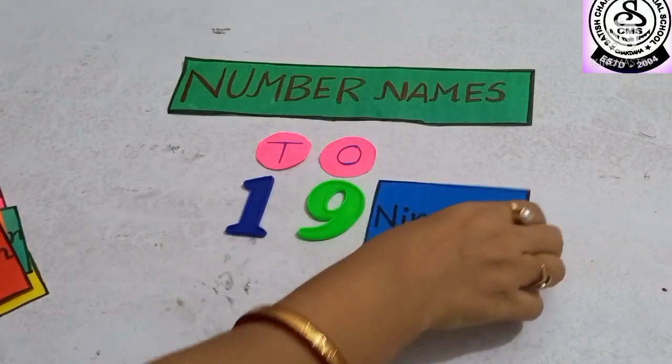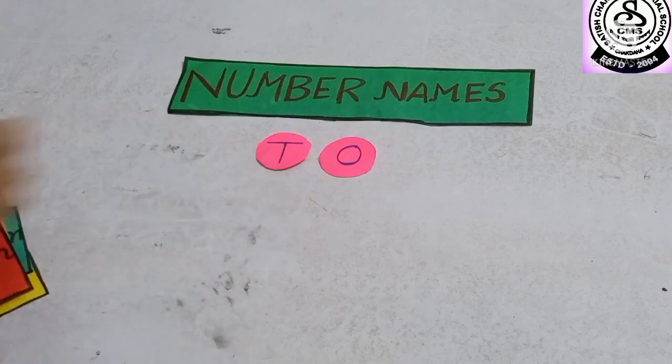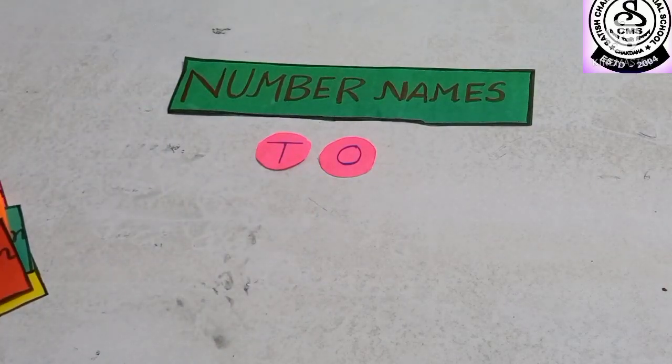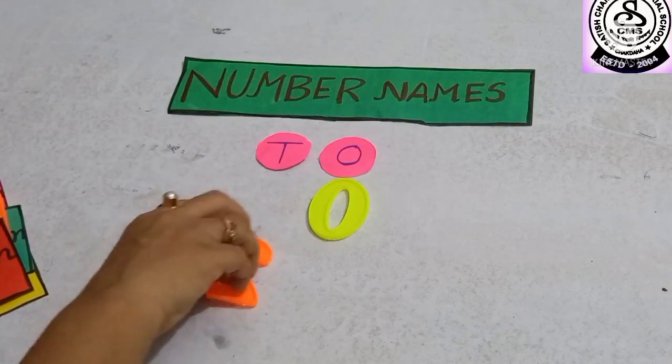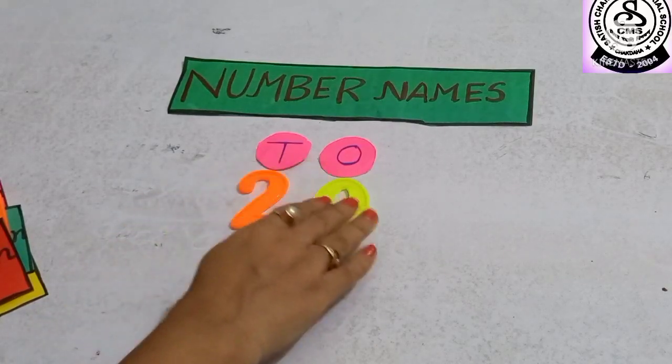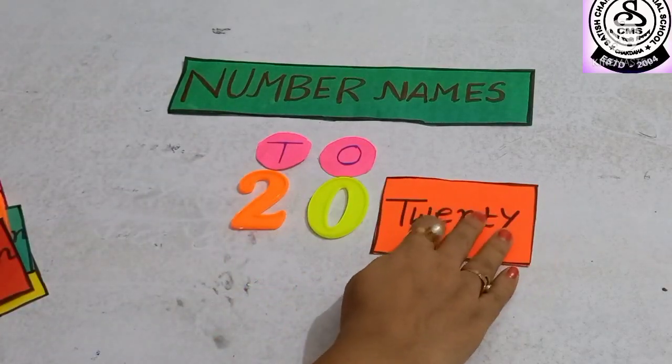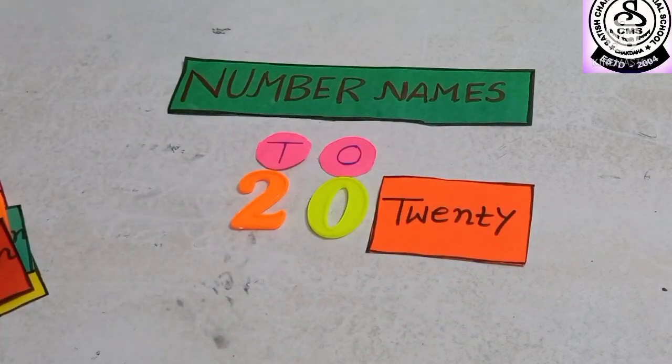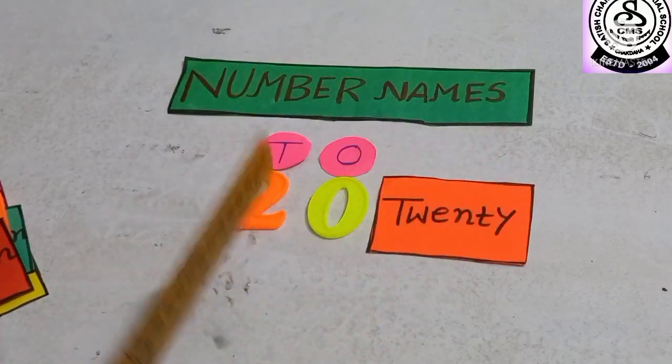And after 19? Yes, you are right. 2, 0, 20. What is the spelling of 20? T-W-E-N-T-Y, twenty.